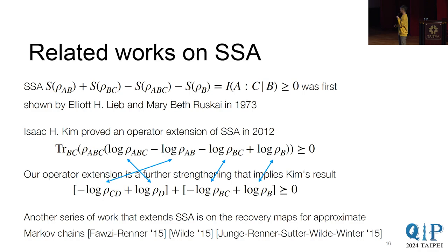And in fact, our operator extension is a further strengthening of that. So we can take our inequality, multiply by rho, and then take a trace. And similar to the previous case, there's also this trick where we can turn a density matrix on a region to its complement. And so, in fact, we can show what Kim has shown. It's worth mentioning that there is another long line of generalization, which is this recovery map about approximate Markov chains. There are many more works, but we don't have space to fit all of them.